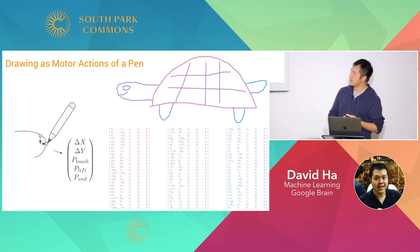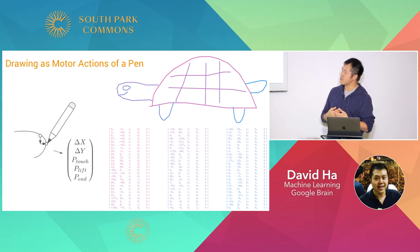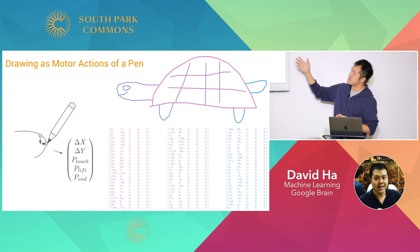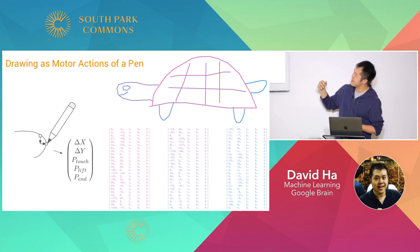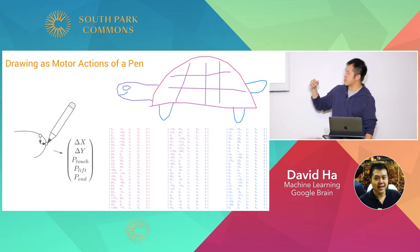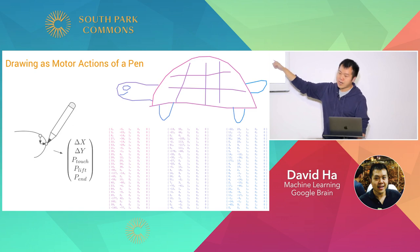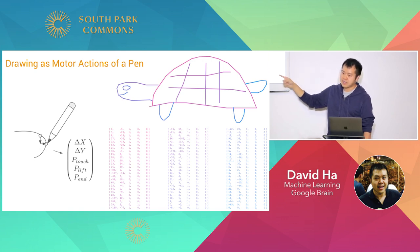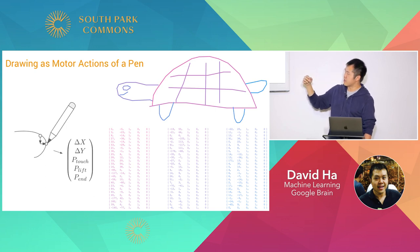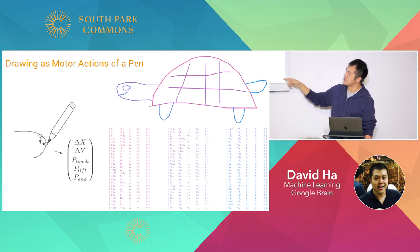The dataset we work with looks like these vector images. The turtle shown is something I drew — it's not as good as Picasso, but it'll do the job. We're going to model pictures as a sequence of motor actions of a pen: their relative x and y coordinates and the state of the pen. We're not going to model pixel images traditionally; our model will generate these sequences to mimic vector images.